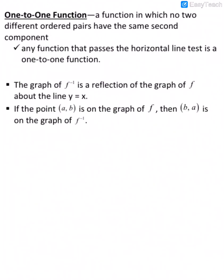One-to-one functions are functions in which no two different ordered pairs have the same second component. To determine if a relation was a function, the x value couldn't be repeated. When looking to see if a function has an inverse that's a function, it's the opposite: if the ordered pairs have the same y value, then it doesn't have an inverse that's a function.